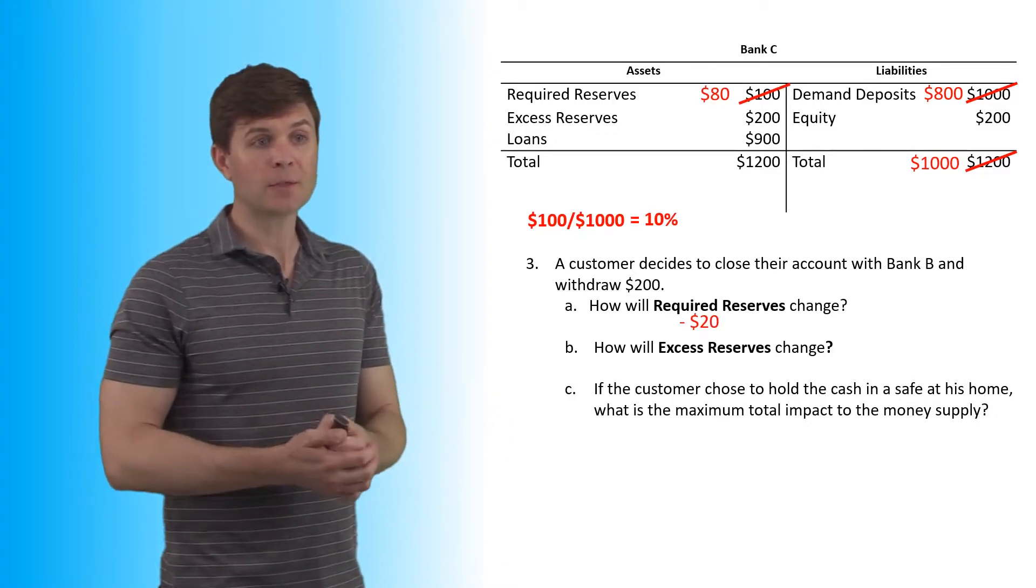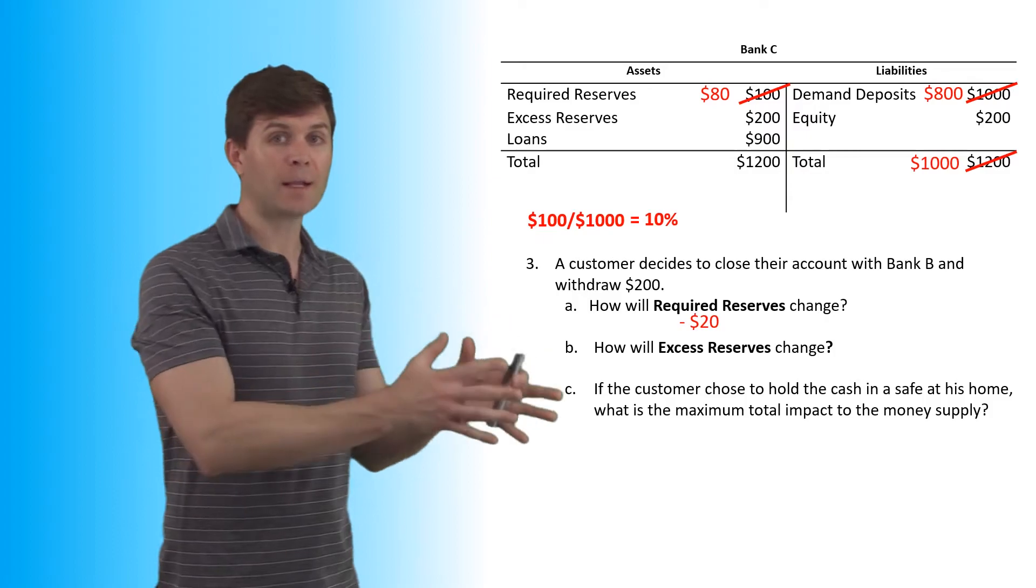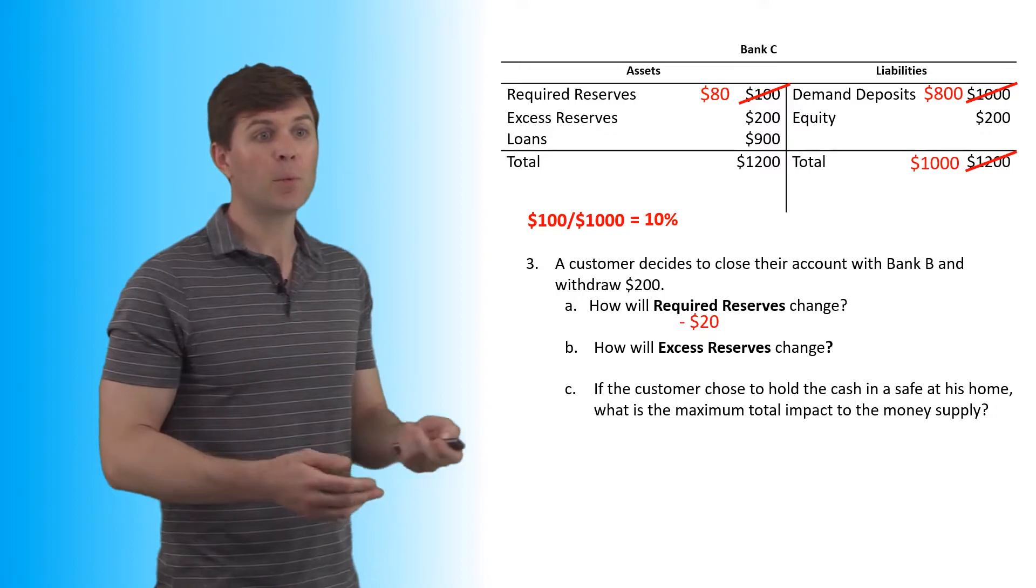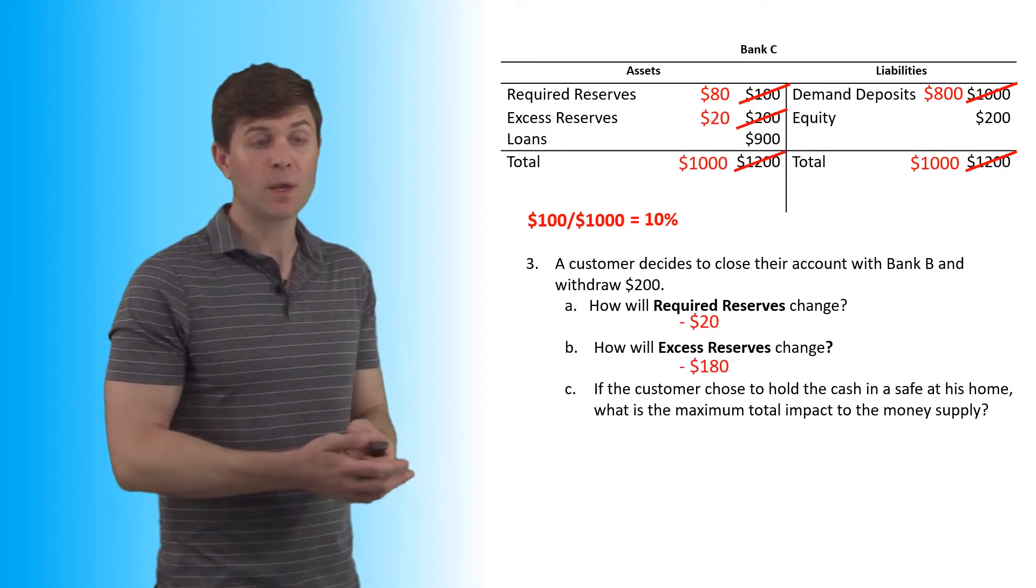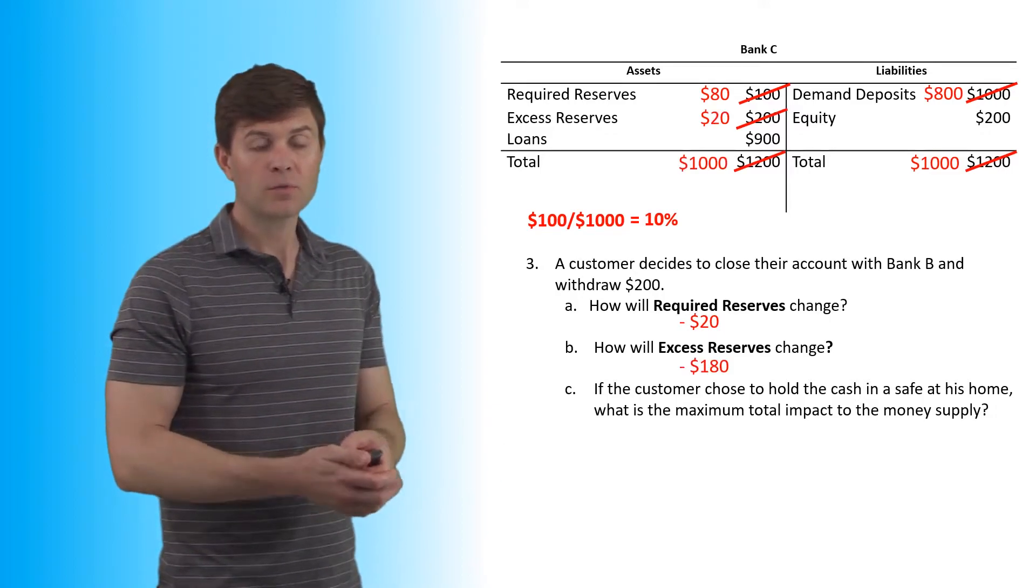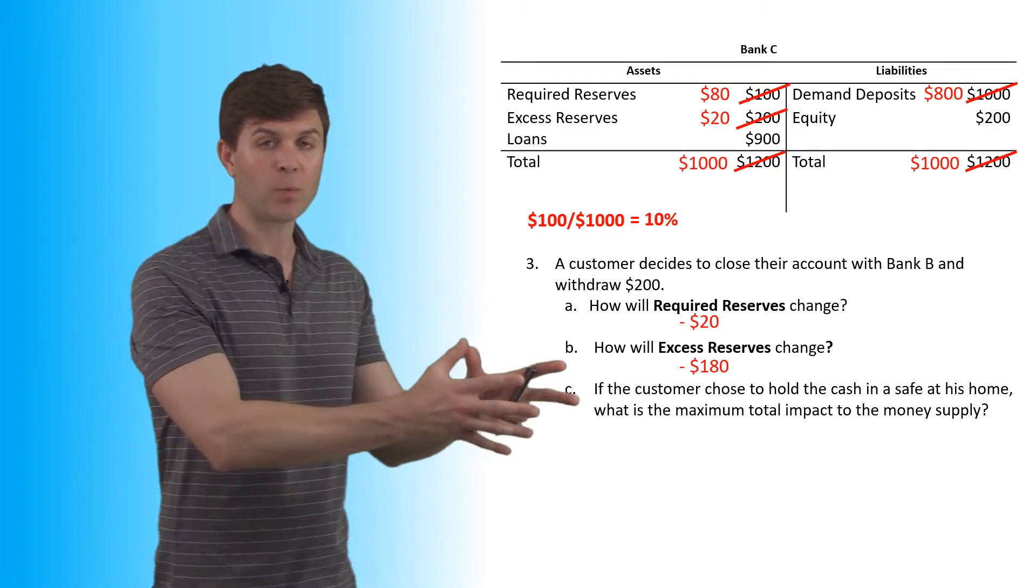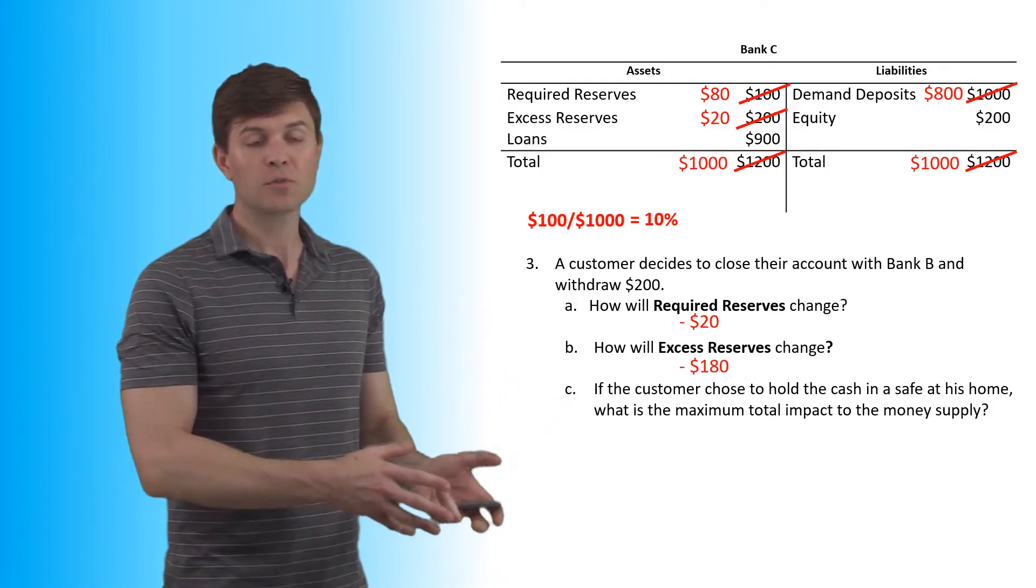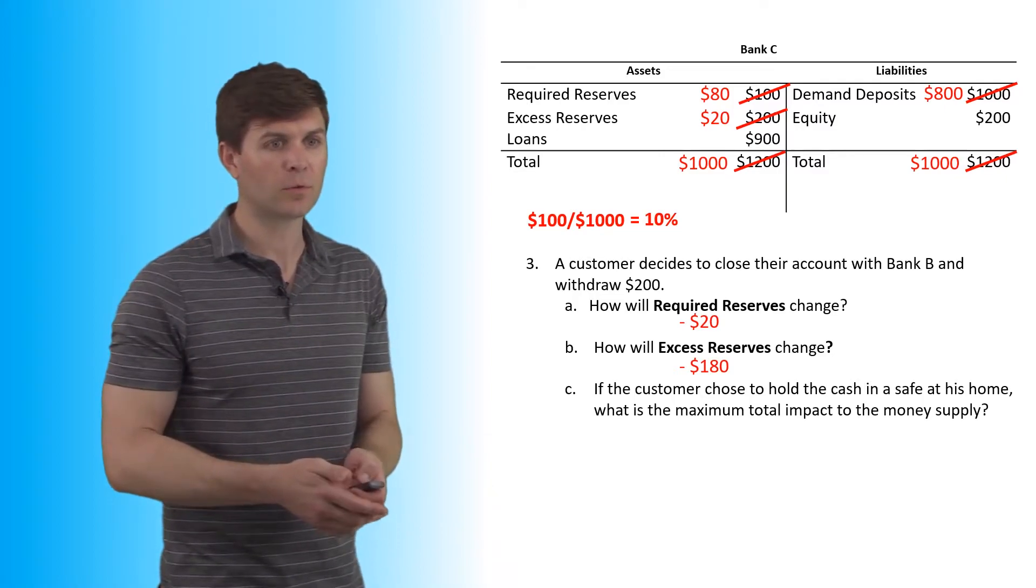$200 was taken out, $20 less has to go in the required reserves at this point. So we lose $20 in the required reserves, but we also lose the remainder to those excess reserves. So the guy took $200 out, $20 was in the required reserves, $180 of that was sitting in excess reserves. So we lose $180 to the excess reserves in addition.